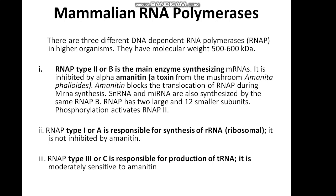Mammalian RNA polymerase. There are three different DNA-dependent RNA polymerases in higher organisms, with molecular weight about 500 to 600 kiloDaltons. RNA polymerase type 2, or B, is the main enzyme synthesizing messenger RNA in mammals. It is inhibited by alpha-amanitin, a toxin from the mushroom Amanita phalloides. Amanitin blocks the translocation of RNA polymerase during messenger RNA synthesis. snRNA, mRNA, and miRNA are also synthesized by RNA polymerase B.